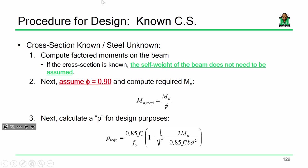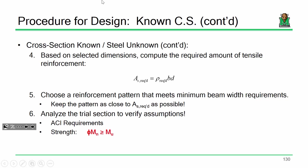Here's our design procedure. Step one: compute the factored moments. Remember last time we had to assume the self-weight of the beam, because we didn't know what the beam looked like. Now we do — it's a precast element, we know the dimensions, so no assumption is needed there. The only assumption we have to make is phi — our phi value of 0.9. Remember, phi varies as a function of strain in the steel, and if you don't know what the steel is, you don't know the strain. So we'll assume phi equals 0.9. Then calculate rho, multiply rho times BD to get an area of steel, go off our beam design chart, pick a few families of representative reinforcement patterns, pick the most economical one, check our ACI requirements, and you're done.